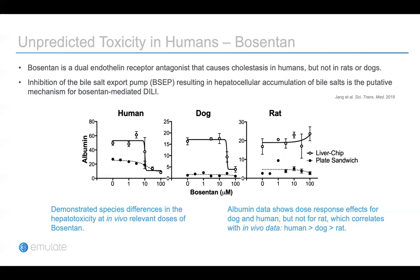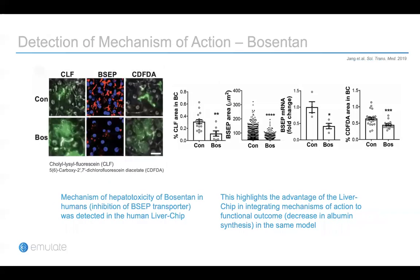We then tested whether we could detect the mechanism of toxicity of bosentan using the human liver chip. In the control condition, CLF — a BSEP substrate — and CDFDA, an MRP2 substrate, were effluxed out to the bile canalicular area as expected. However, when they were inhibited by the drug bosentan, you can see intracellular accumulation of these dyes. This is consistent with the known mechanism of hepatotoxicity of bosentan in humans. Not only transport activities, but BSEP protein and mRNA levels were also measured and quantified. This highlights the advantage of the liver chip in integrating mechanisms of action with functional outcomes in the same model.